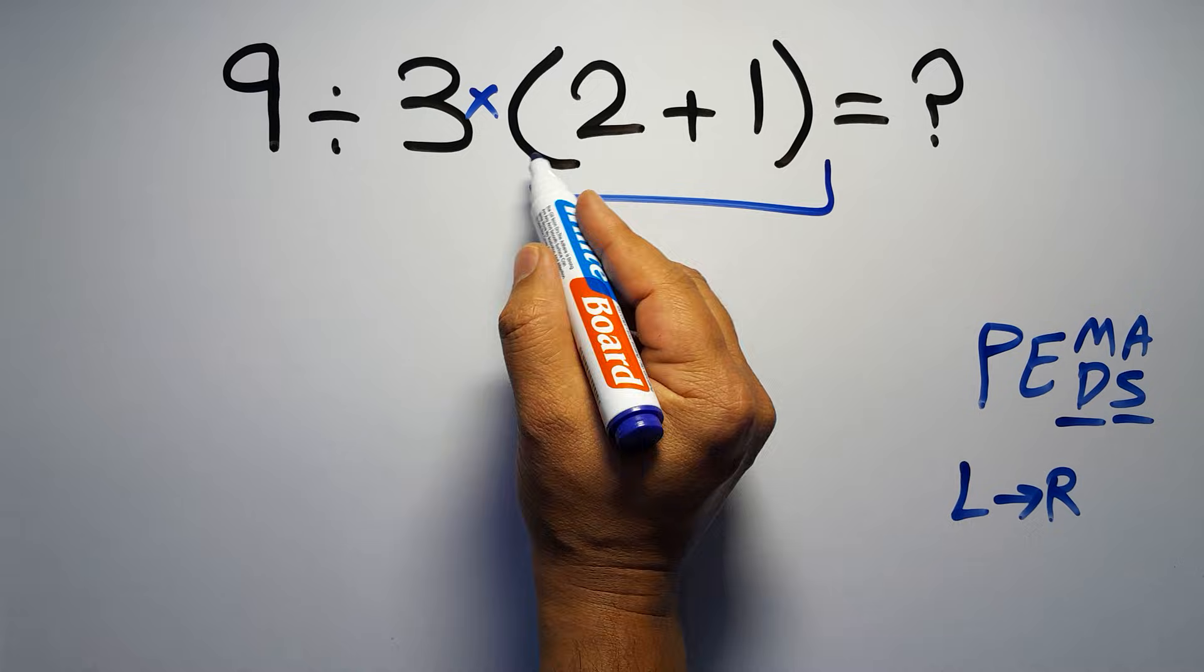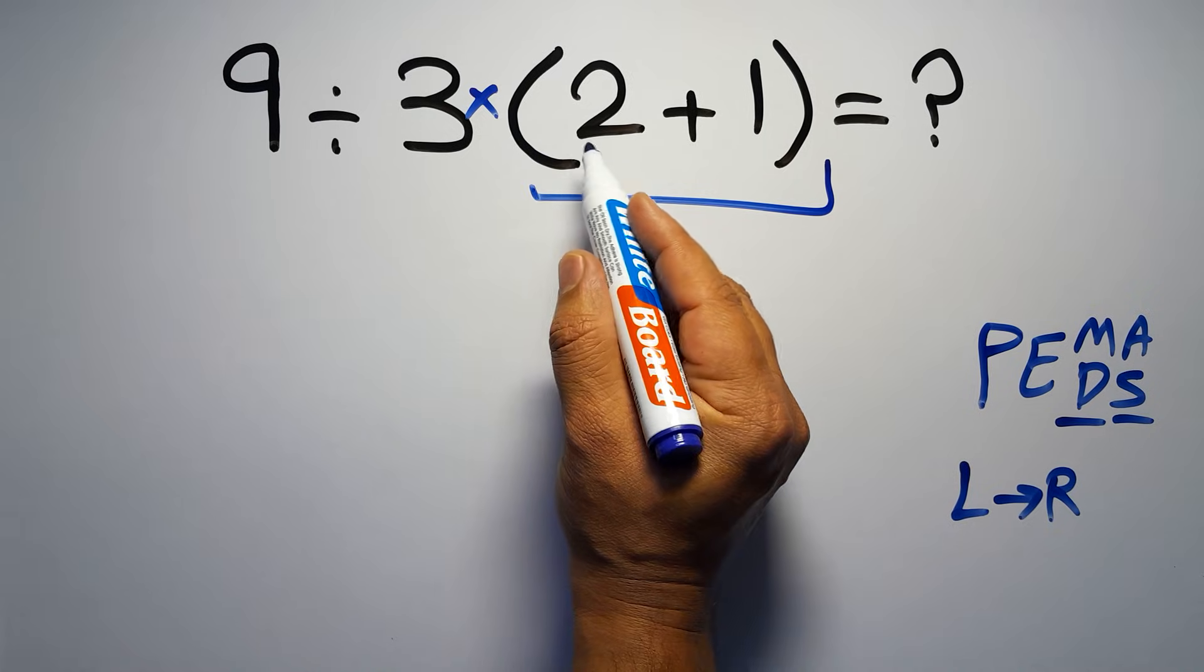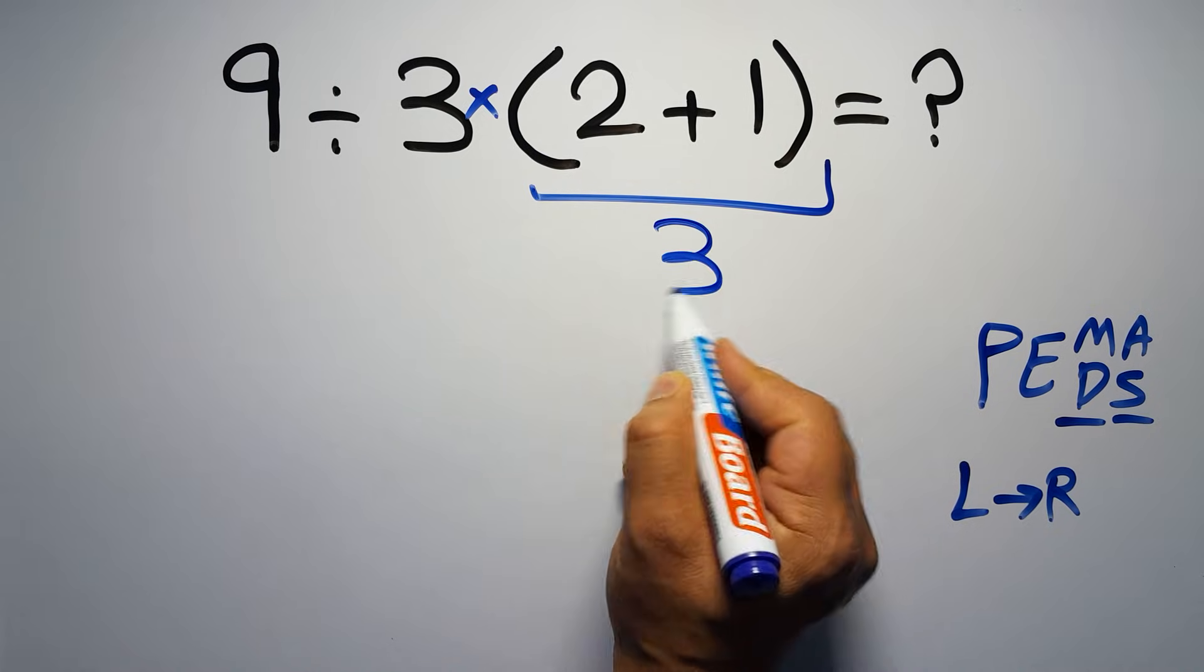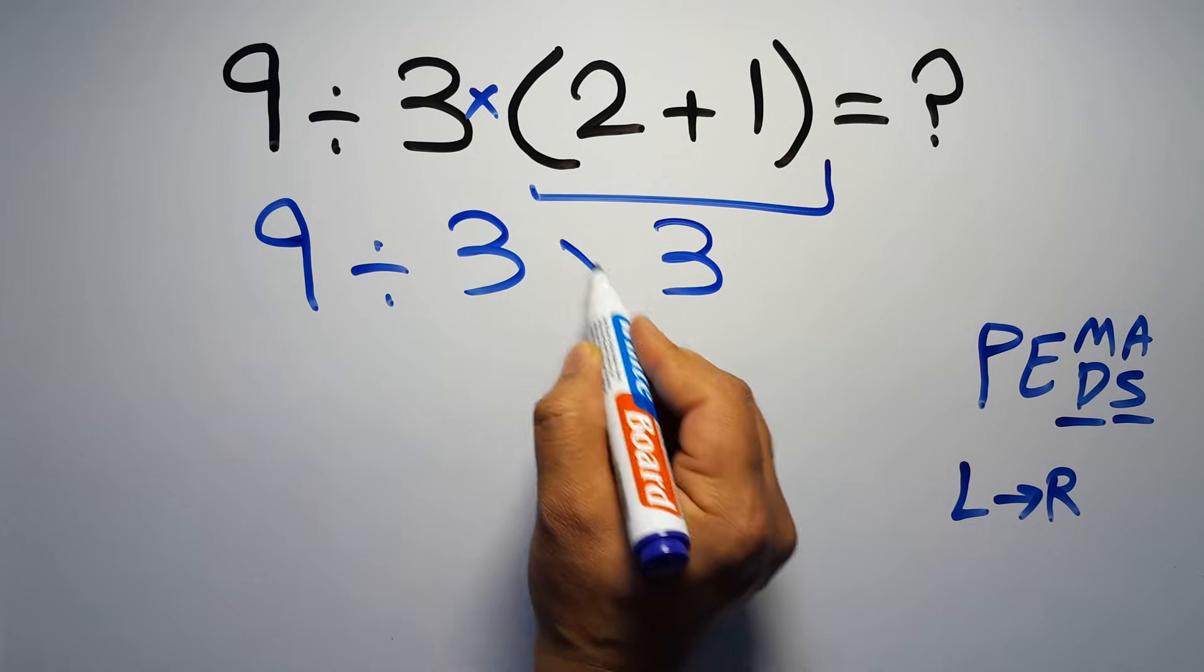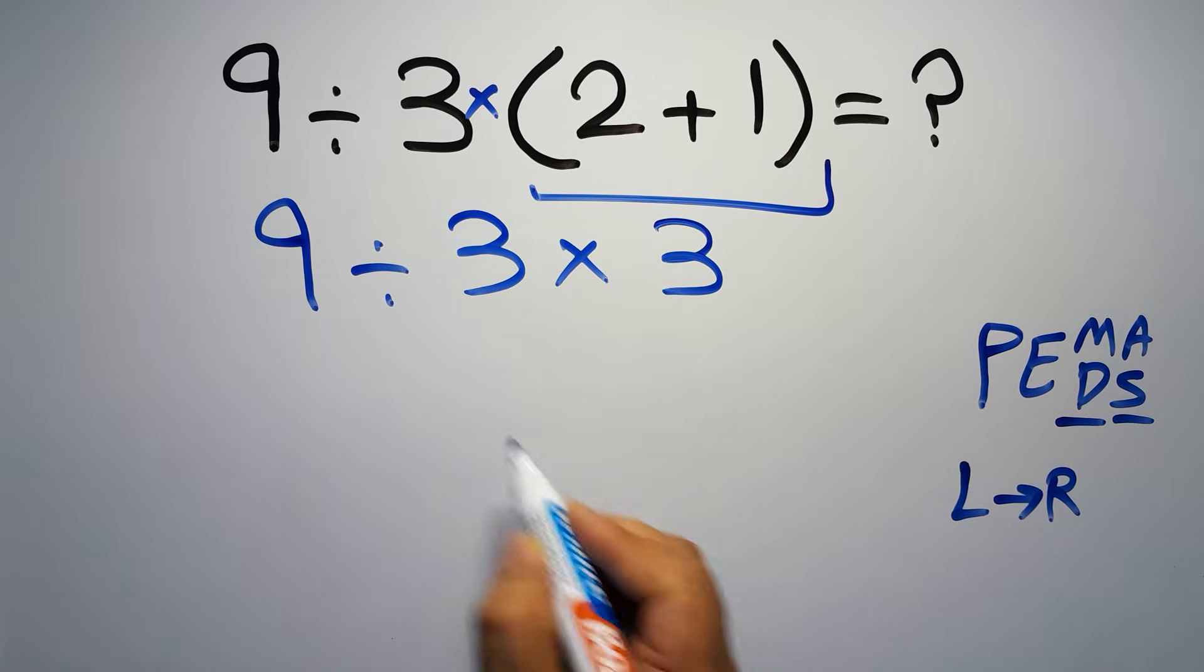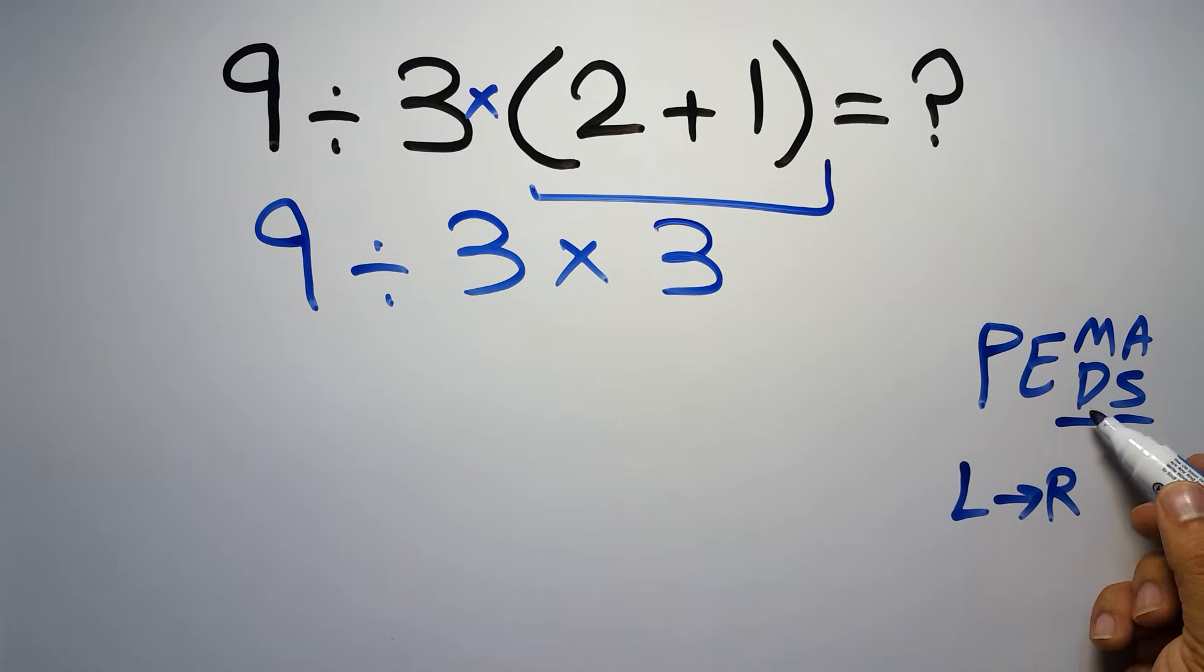So first we have to do this parentheses. Inside this parentheses, we have 2 plus 1, which equals 3. So 9 divided by 3, then times 3. Now we have one division and one multiplication. As I said, multiplication and division have equal priority, and we have to work from left to right.